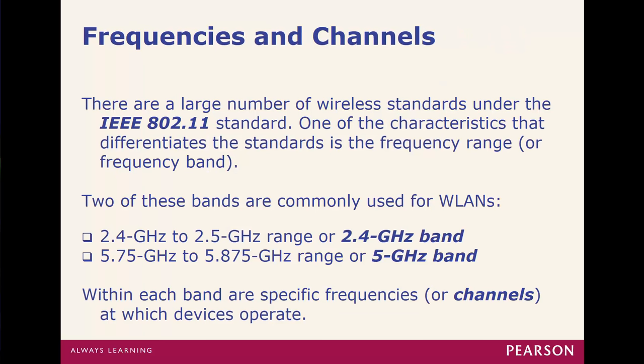We also have frequencies and channels. Most often you hear about the 2.4 GHz or the 5 GHz bands — those are the wireless frequencies we're allowed to use because they're free, we don't have to pay for licensing. We can use 2.4 GHz to 2.5 GHz, with specific steps like 2.401, 2.402, 2.403, and so forth — all of those are known as specific channels. We also have the 5 GHz band, from 5.75 to 5.875 GHz, so roughly a 100 MHz range to work with. Channels are a specific band within a frequency.